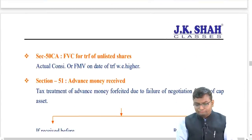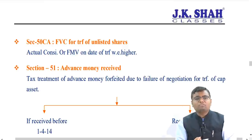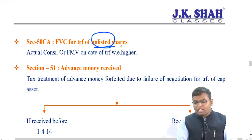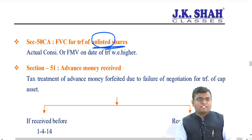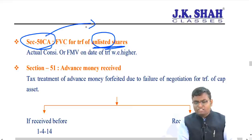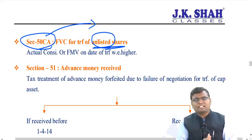Section 50CA: when transferring unlisted shares, the full value of consideration is the actual consideration or fair market value on the date of transfer, whichever is higher. This section is easy to forget in exams, like rebate under Section 87A, Section 89, standard deduction of Rs. 50,000 for salary, or 30% standard deduction for rental income.